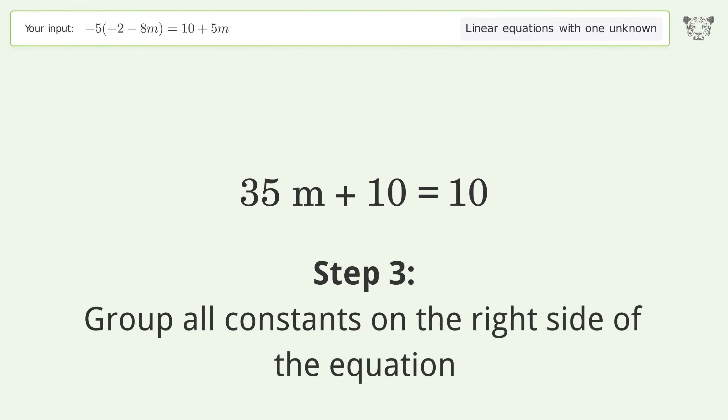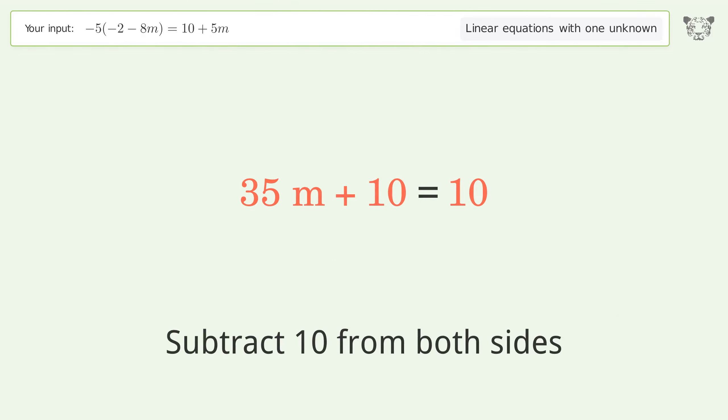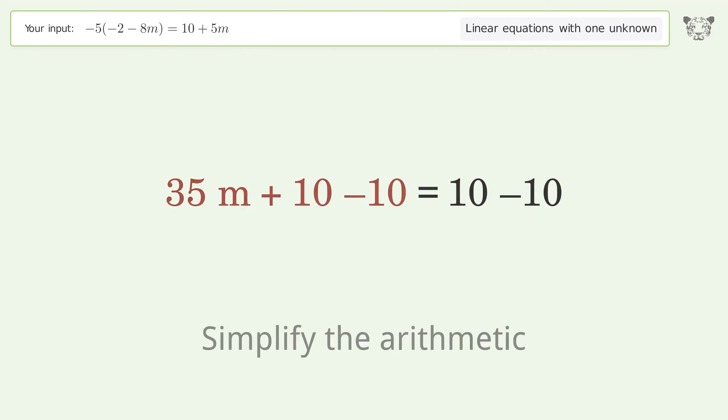Group all constants on the right side of the equation. Subtract 10 from both sides, then simplify the arithmetic.